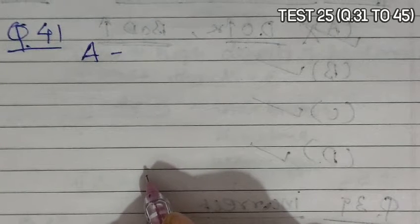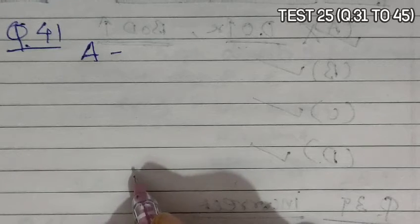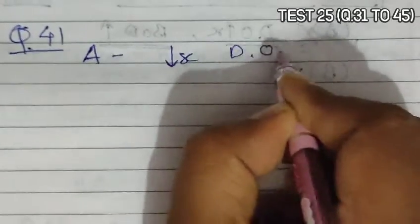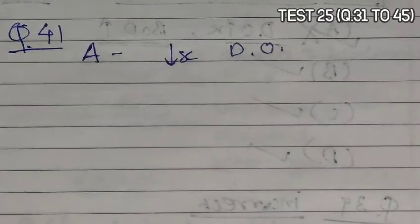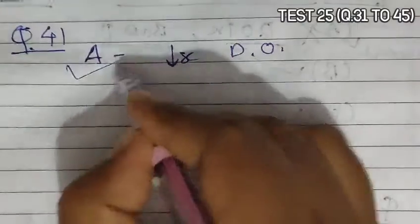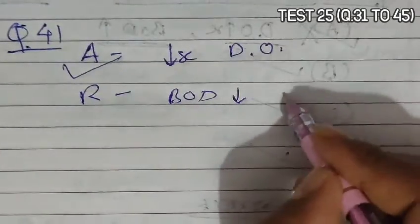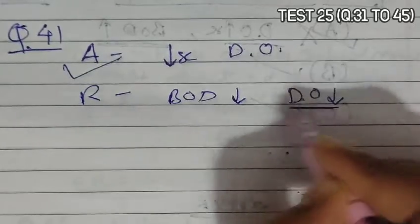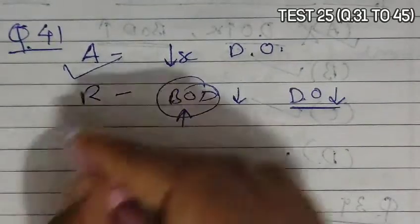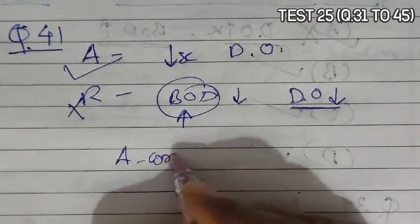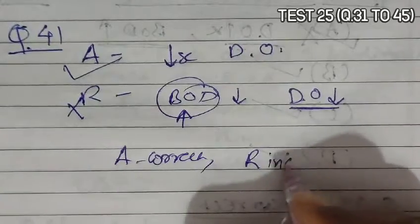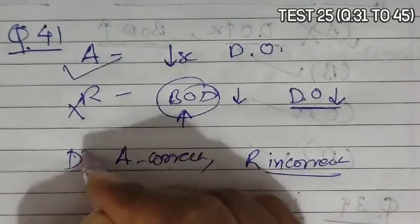Question 41 presents an assertion-reason question. The assertion is that microorganisms involved in biodegradation of organic matter in the receiving water body consume a lot of oxygen, causing a sharp decline in dissolved oxygen downstream from the point of sewage discharge — this is correct. The reason given is that BOD decreases when dissolved oxygen decreases. However, when dissolved oxygen decreases, BOD must increase, not decrease — so the reason is incorrect. A is correct and R is incorrect, so B becomes the correct answer.